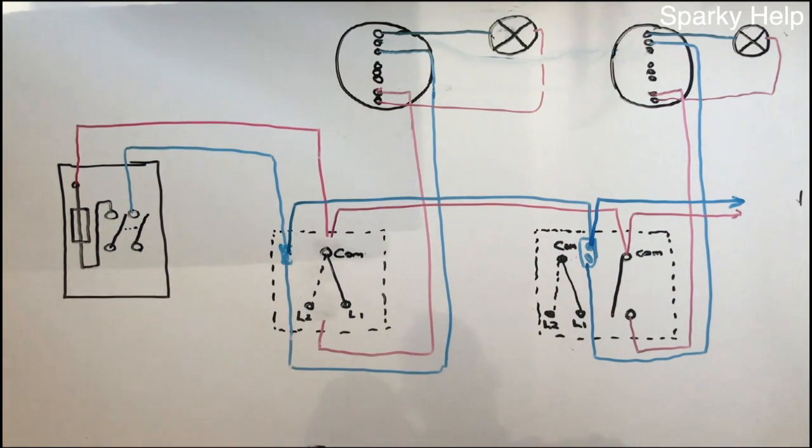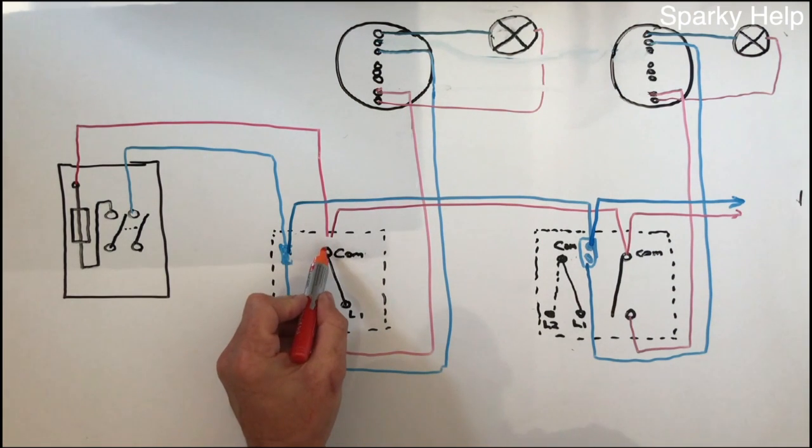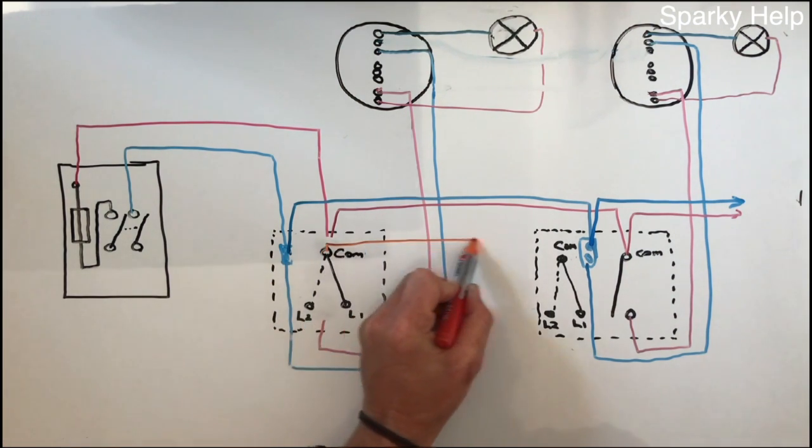So we run a three-core from here to here. So that would be brown, black and grey, but the point being, it's the same as before.